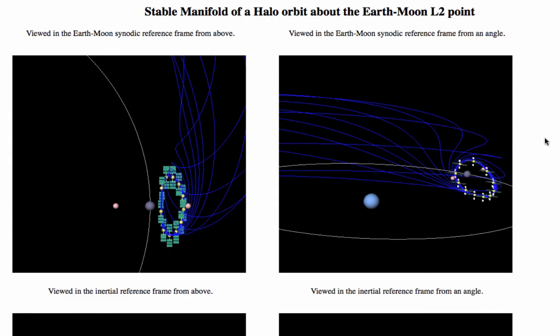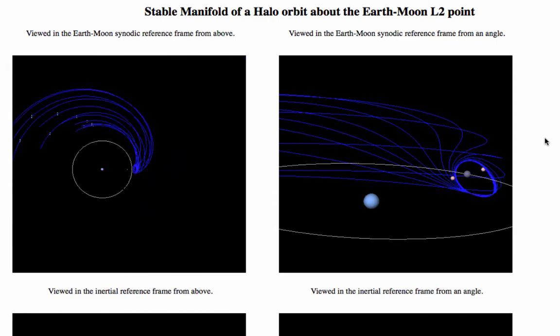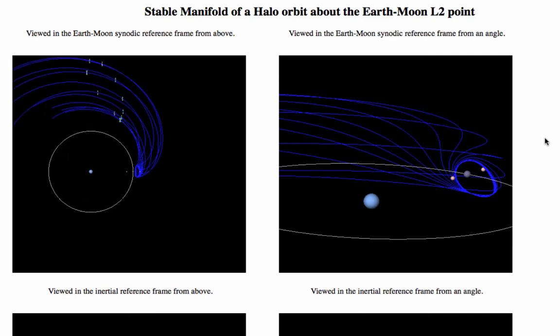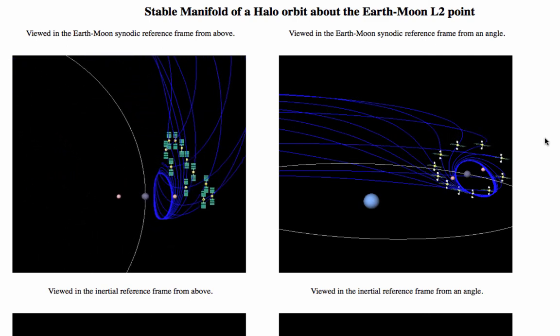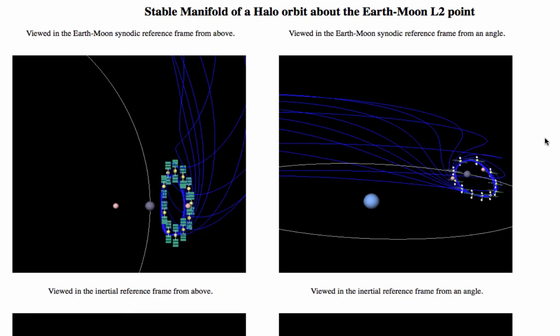So that would be kind of like pushing the pendulum exactly right so it landed pointing upright and didn't move. That's right. So it sounds like you would have to be very careful with your initial condition to do that. That's right. How do you find these orbits, these manifolds?